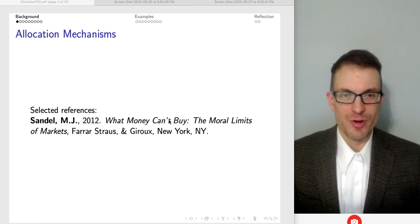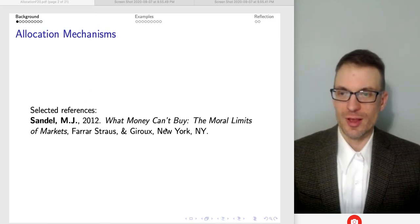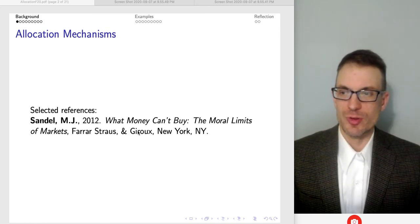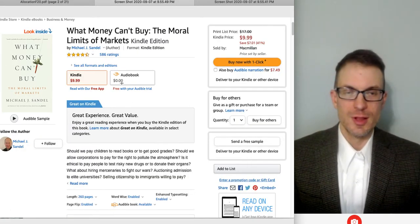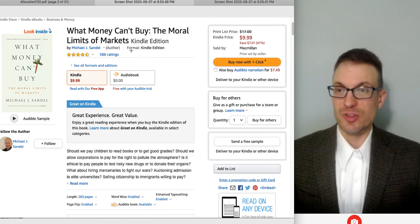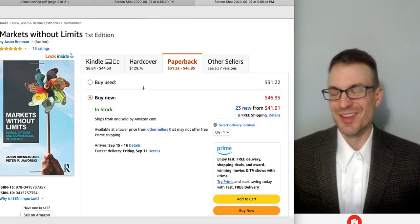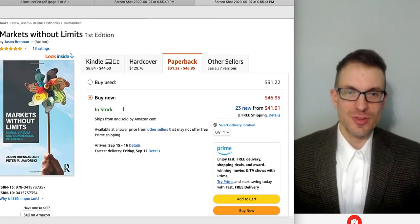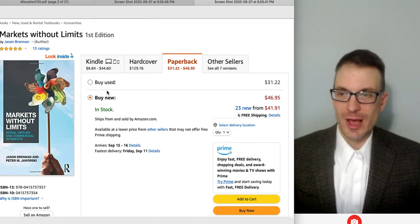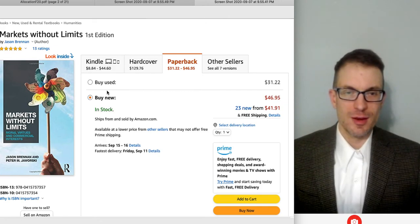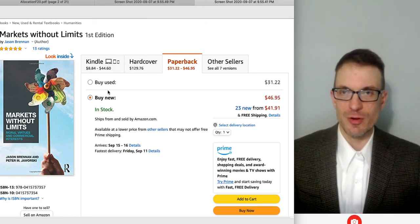Here is the main reference for this lecture, especially for the examples. This is Michael Sandel's What Money Can't Buy, The Moral Limits of Markets. So you can find that book here. It's a really interesting book, especially if you're interested in the area of ethics and economic behavior, as is the goal of the course, and if you're interested in morality and markets more generally.